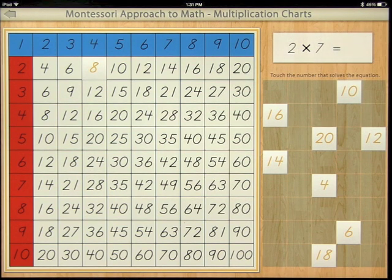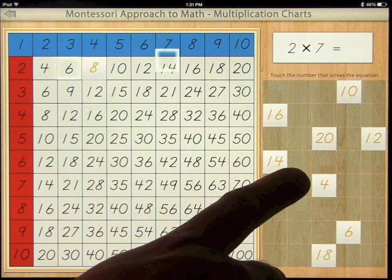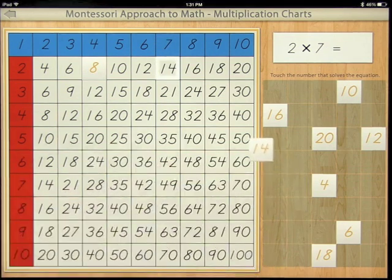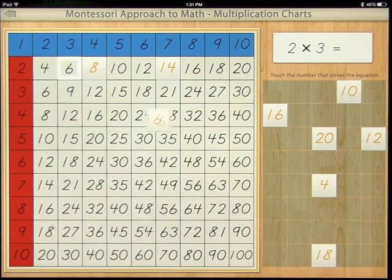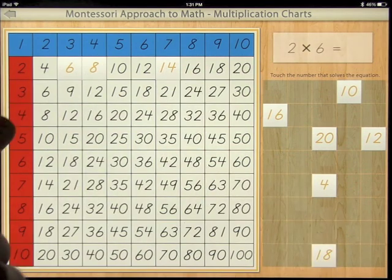2 times 7 equals 14, 2 times 3 equals 6. And once you go through the 2 times table, it will move on to 3, 4, 5, 6, 7, 8, 9, and 10, and so on.